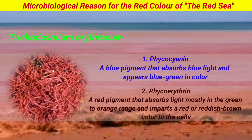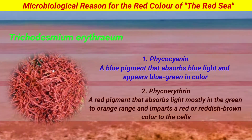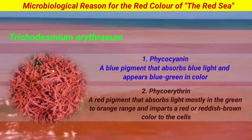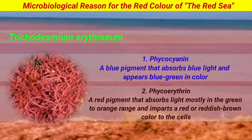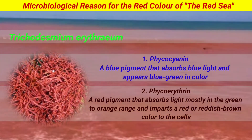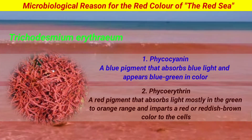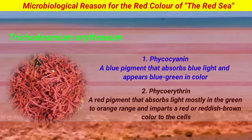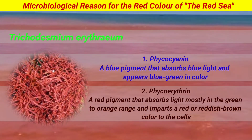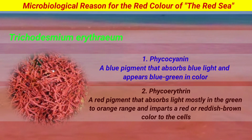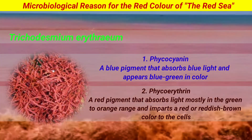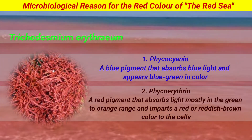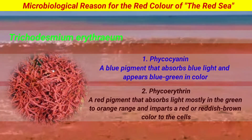Phycoerythrin is a red pigment found in Trichodesmium erythraeum and some red algae. It absorbs light most efficiently in the green to orange range, and imparts a red or reddish-brown color to the cells. The presence of these pigments in Trichodesmium erythraeum contributes to the characteristic blue-green color normally, and reddish or reddish-brown appearance of the sea during blooms.